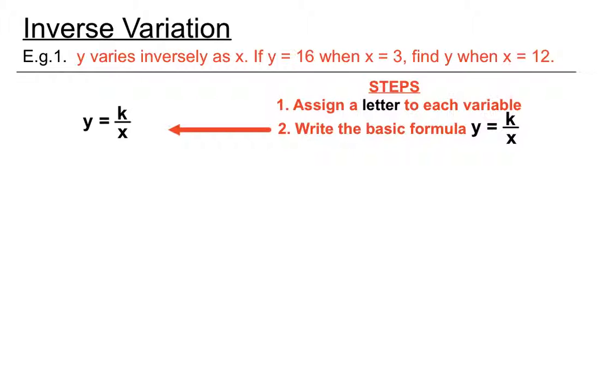Just as in the direct variation steps, we have to sub in the pair of values. The first two numbers given in the question are your pair of values, mentioned in the same breath. If Y equals 16 when X equals 3, then find Y when X equals 12. We're going to sub those values in straight underneath the basic formula. I've put 16 under the Y because Y equals 16, and I've put 3 where the X should go.